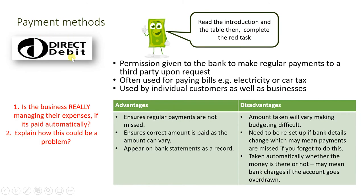The next payment method is direct debit. This gives permission to the bank to make regular payments to a third party upon request, and is often used for paying regular bills like electricity or car tax. For example, you can set up a direct debit so that Sky or your electricity provider debits your account monthly. The third party — meaning the provider outside of yourself — receives the payment automatically. It's used regularly both at home and by businesses.